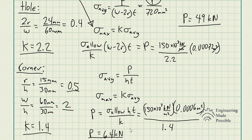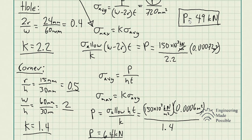Now the question is: what is the maximum load this plate can handle? We have 49 kilonewtons at the hole and 64 kilonewtons at the corner. We must choose the lowest value, because if you apply more than 49 kilonewtons you will exceed the allowable stress at the hole, even though the corner is still fine. Always choose the lowest P for the most conservative, safe design. This is how you solve stress concentration problems involving holes or corners with radii.